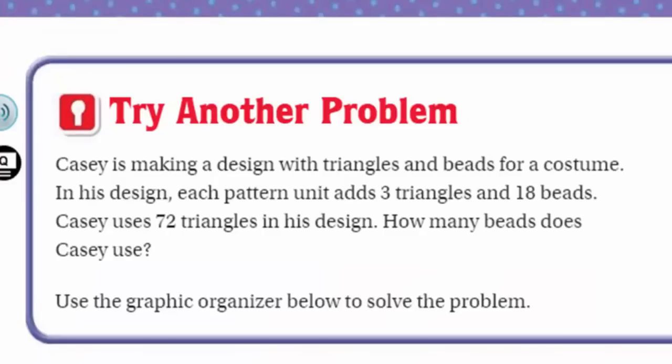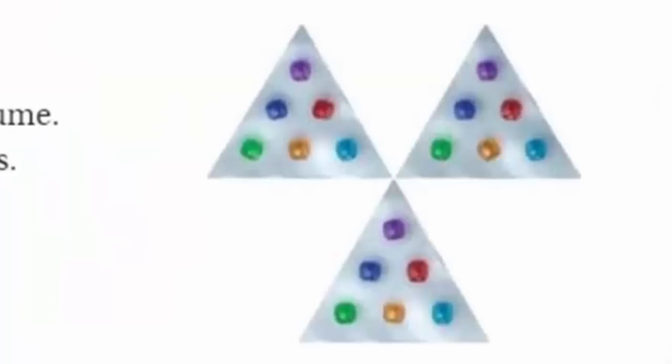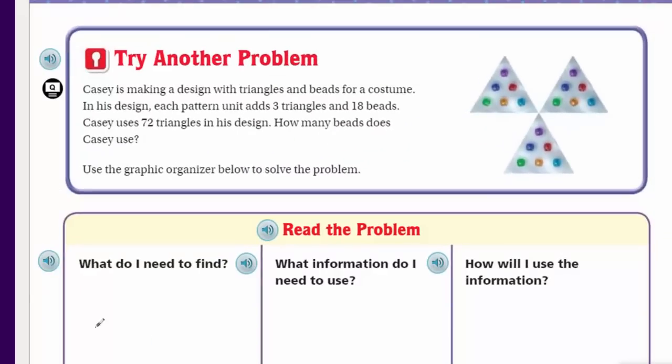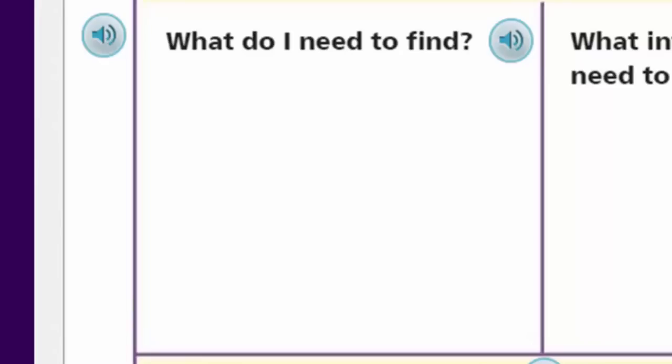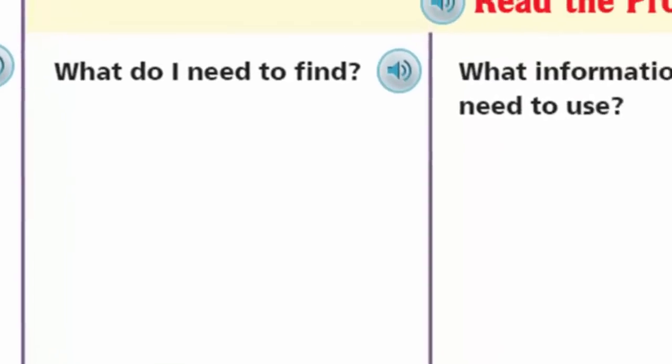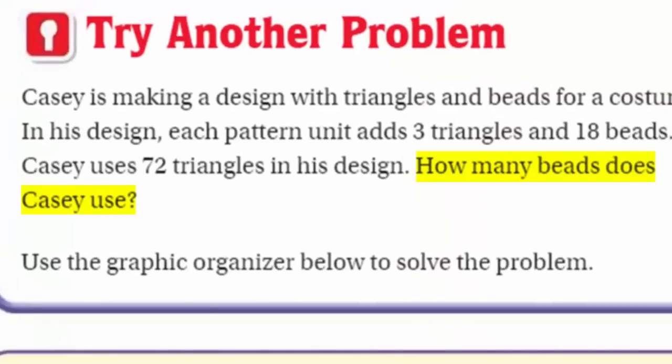Casey is making a design with triangles and beads for a costume. In his design, each pattern unit adds three triangles and 18 beads. Casey uses 72 triangles in his design. How many beads does Casey use? Use the graphic organizer below to solve the problem. First thing, though, is what do I need to find? Well, I know that was in the question, and the question stated, how many beads does Casey use?